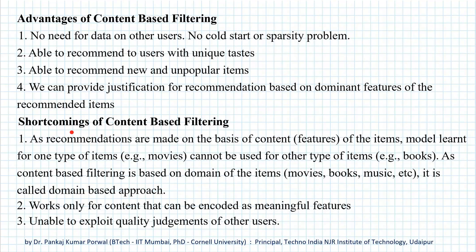There are some shortcomings of content-based filtering as well. First, since recommendations are made on the basis of content or features of the item, a model learned for one type of item — for example, movies — cannot be used for other types of items like books, music, or news articles, because the features differ across item types. Because these features are domain-specific, content-based filtering is also called a domain-based approach. Second, it works only for content that can be encoded as meaningful features. Third, it is unable to exploit the quality judgment of other users, as we train a user-specific classifier.